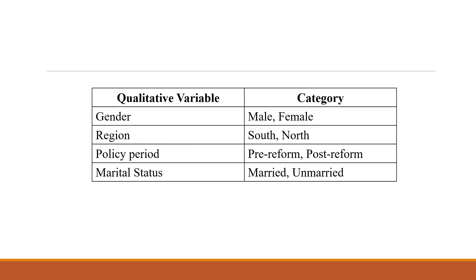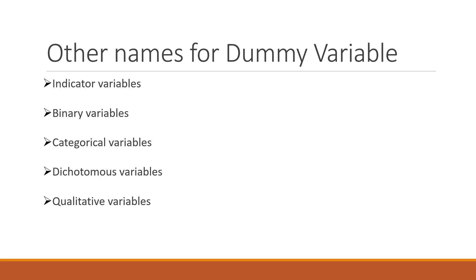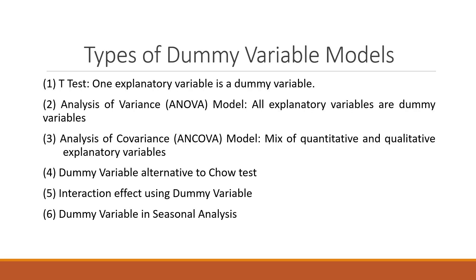The qualitative variable gender has categories male and female; region has categories south and north; policy period has pre-reform and post-reform; marital status has married and unmarried. These categories are coded into 1 and 0. Other names for dummy variables include indicator variable, binary variable, categorical variable, dichotomous variable, and qualitative variable.